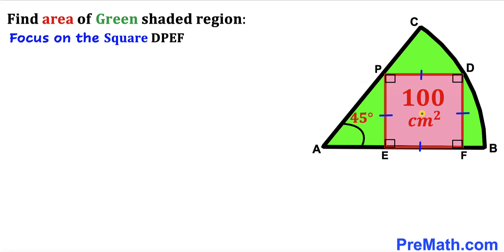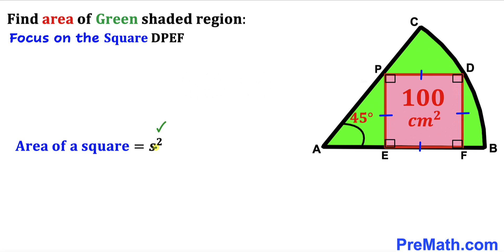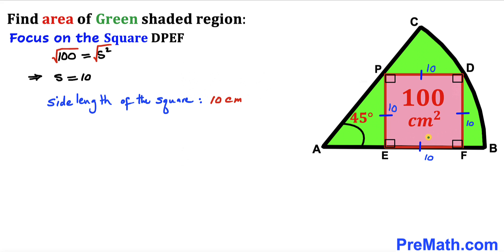Let's focus on this pink square DPEF whose area has been given as 100 centimeters square. Recalling the area of a square formula: Area = S², where S represents the side length. Filling in: 100 = S². Taking the square root on both sides, our side length S turns out to be 10 centimeters. So the side length of square DPEF is 10 across the board.